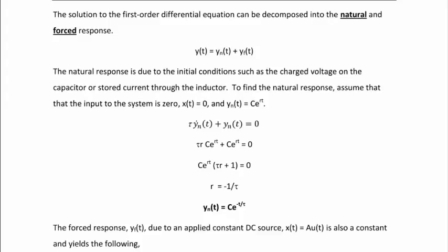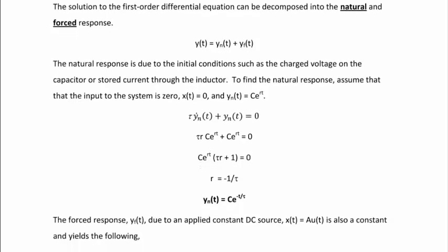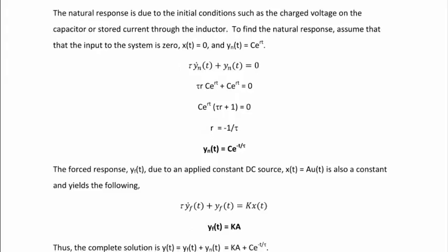Recall that tau equals R_Thevenin·C or L/R_Thevenin depending on whether we have an RC or RL circuit. So the natural response has the form Ce^(-t/tau). The forced response is due to an applied constant DC source x(t) = A·u(t). The forced response satisfies tau·Ẏ_f + Y_f = K·x(t). Since the derivative of a constant is zero, this simplifies to Y_f(t) = K·A. The complete solution is Y(t) = K·A + Ce^(-t/tau).